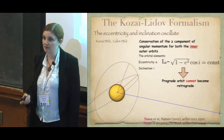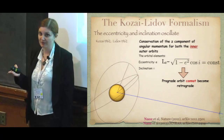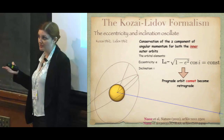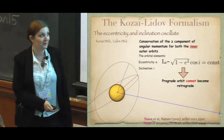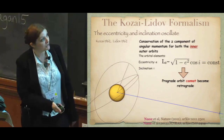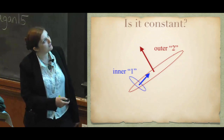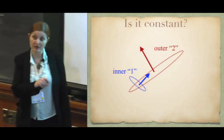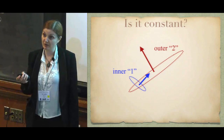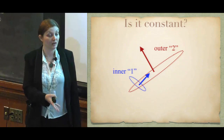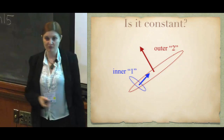He also found the famous Kozai conservation law — the Kozai integral of motion — which is the z-component of the inner angular momentum: √(1−e²)·cos(i) = constant. This means that if you start below 90 degrees inclination, you can never go above 90 degrees, because you cannot change the sign of the cosine. The question I want to ask now is whether this conservation law is really constant.